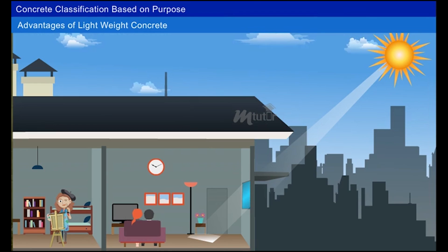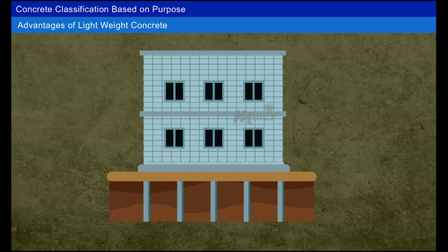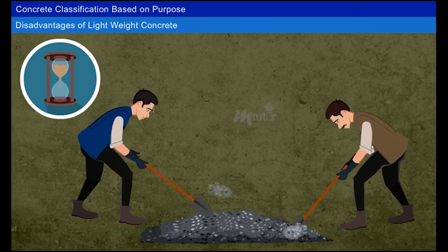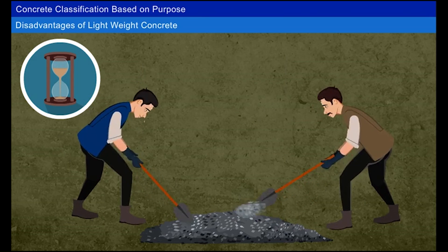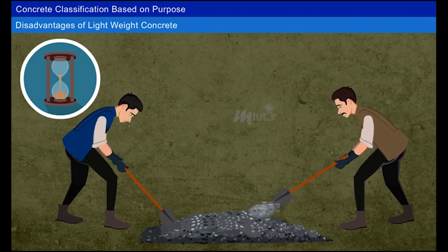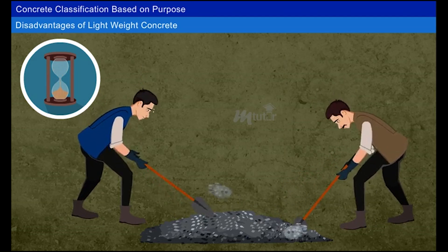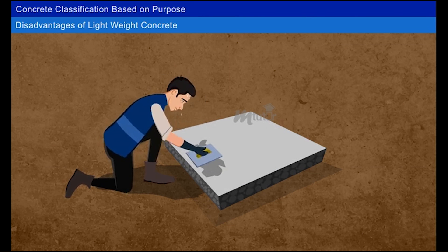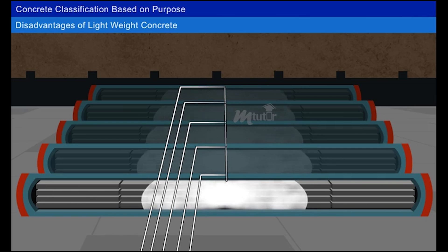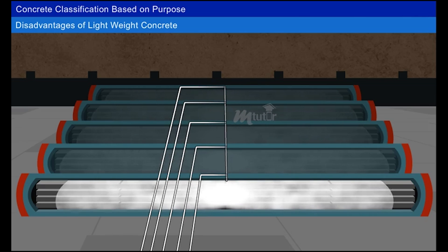Advantages of lightweight concrete: its density is low compared to plain cement concrete, it has low thermal conductivity, and due to reduction of overall weight, structural frames and heavy foundations are saved. Disadvantages: mixing time is longer compared to normal concrete, and in placing and finishing, porosity may develop. Normal curing is not possible, so steam curing is used.